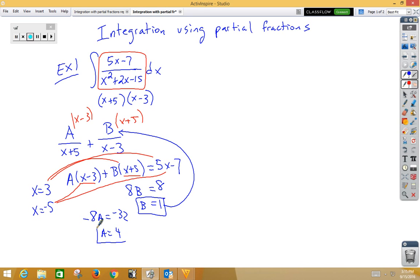I can now plug in a 4 for my A value. So, my original problem can now be broken up into two integrals. My first integral would be 4 over x plus 5 dx. My second integral would be 1 over x minus 3 dx.